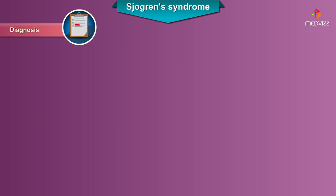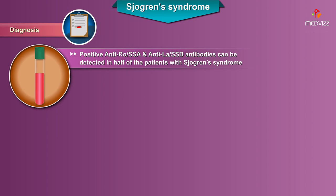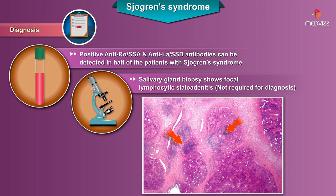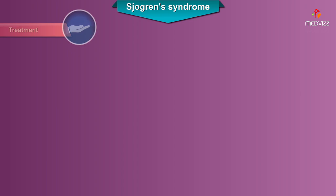The diagnosis is mostly clinical, although a positive anti-Ro (SSA — Sjogren's syndrome type A antibody) and anti-La (SSB — Sjogren's syndrome type B antibody) can be detected in about half of patients. Salivary gland biopsy shows focal lymphocytic sialadenitis, although it is not required for diagnosis.